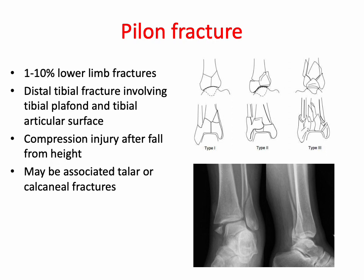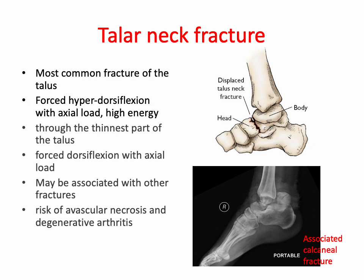A pylon fracture is a distal tibial fracture involving the tibial plafond and tibial articular surface, usually as an axial loading injury, and may have associated talar or calcaneal fractures. Type 1 is an articular fracture with minimal displacement. Type 2 shows displacement of the articular surface without significant comminution. Type 3 has marked comminution and impaction.